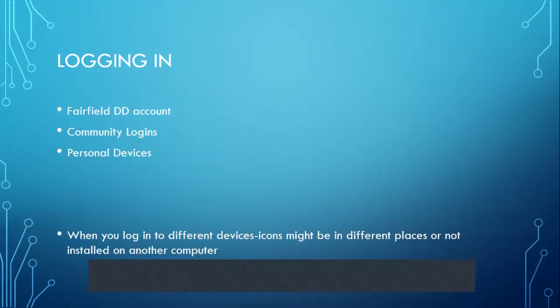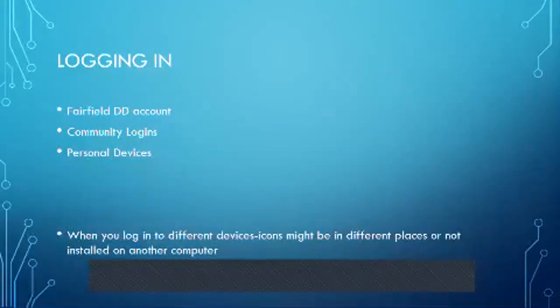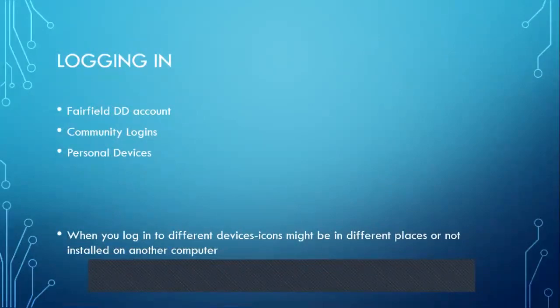A question comes up: why do we have two logins — like the .gov Ohio Fairfield County one, and then the other that's DD? Basically, we have two email addresses. If we worked for juvenile court at the county level, they don't even have a separate one — they just have the FairfieldCountyOhio.gov. So we should get all our emails in the FairfieldDD one.